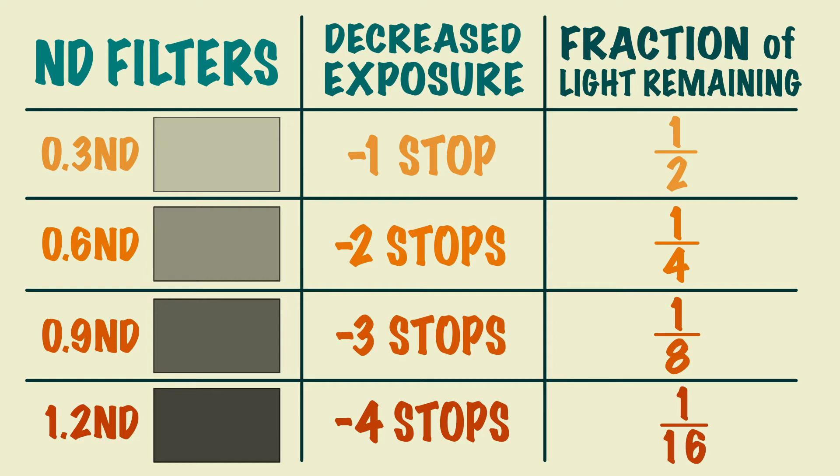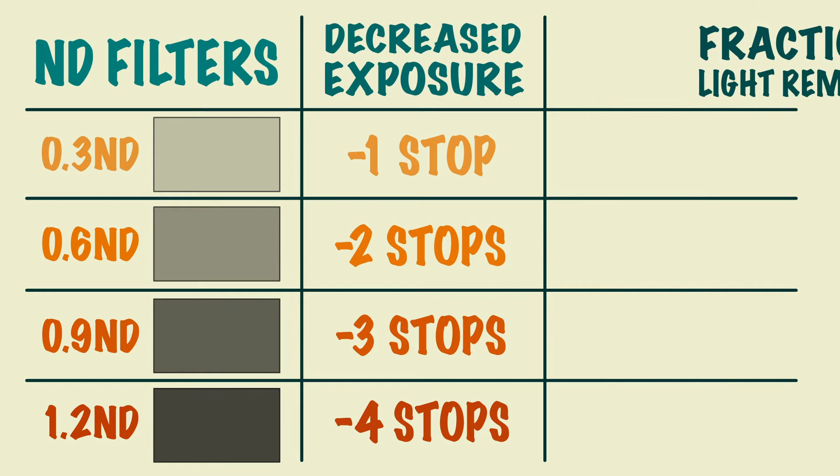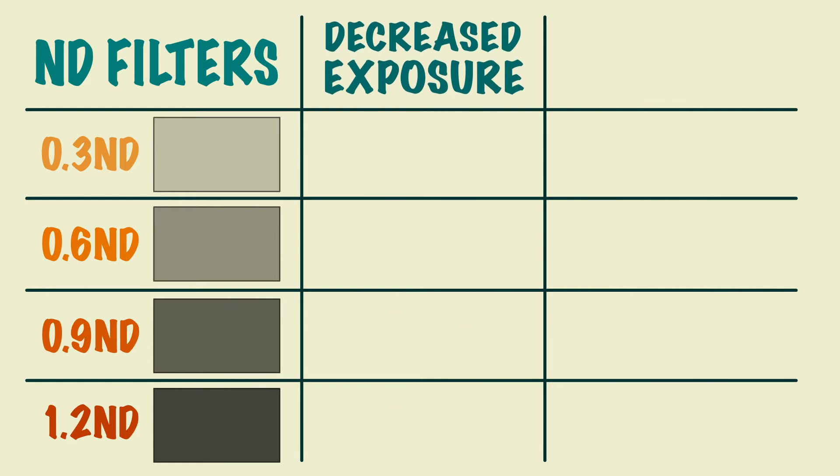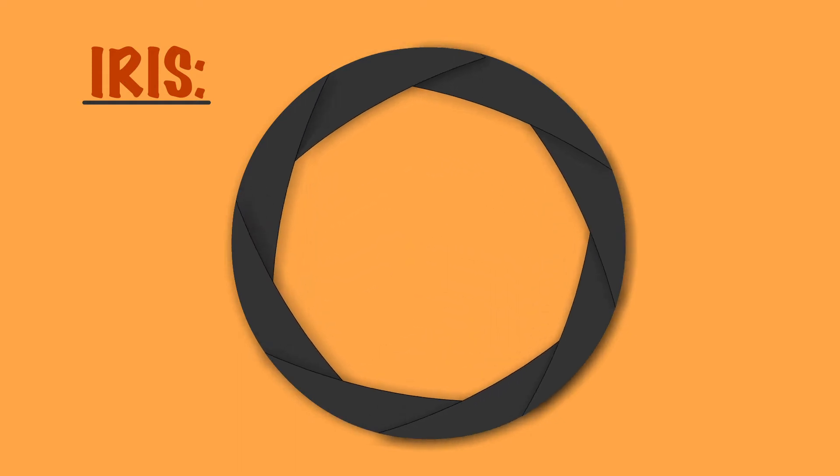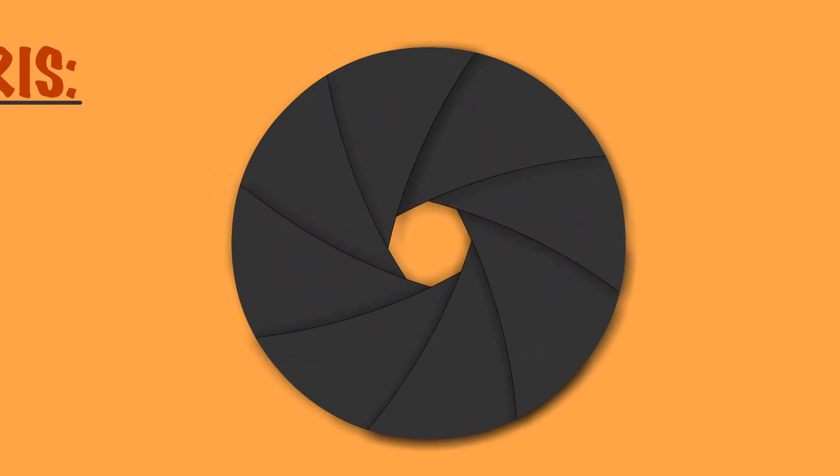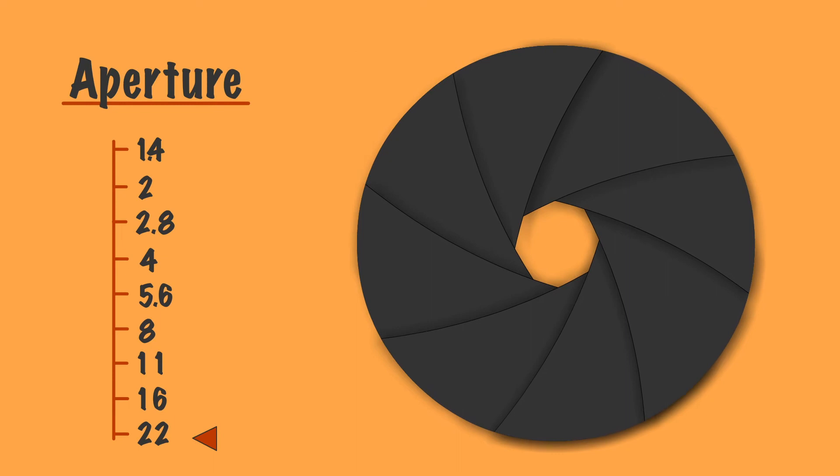Using ND filters can help you get the right exposure for your shot. They can also come in handy when you're looking to open up the iris. The camera's iris is used to control how much light is allowed through the lens. This is also referred to as the aperture, shown on the lens with an f-stop or a t-stop.